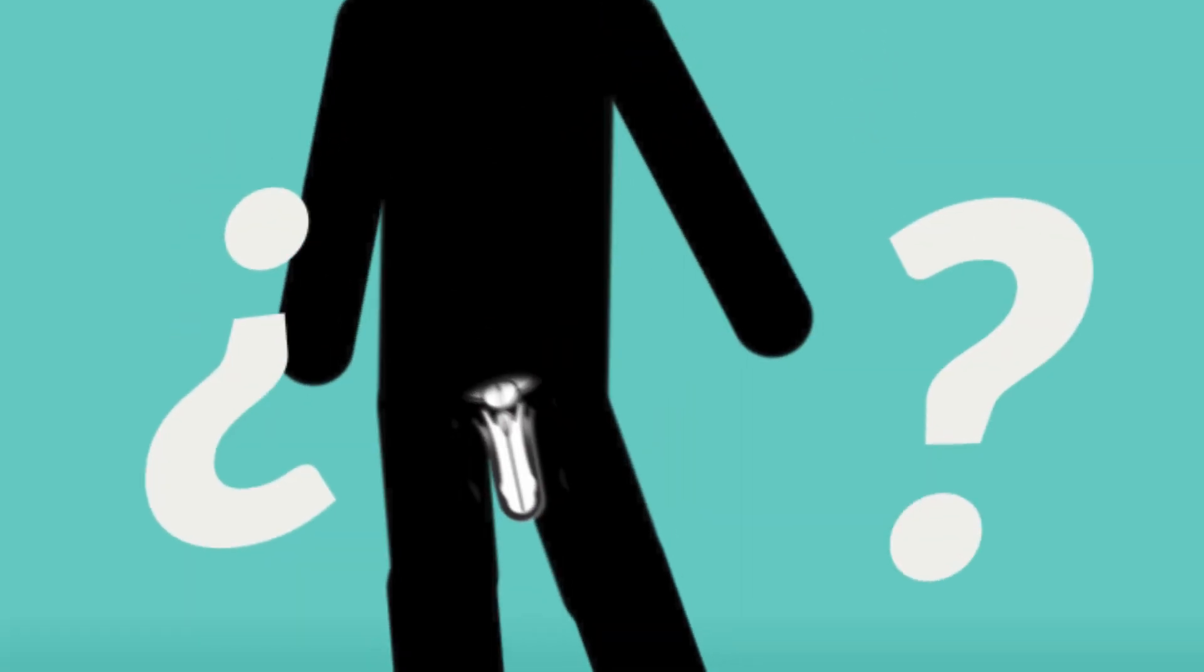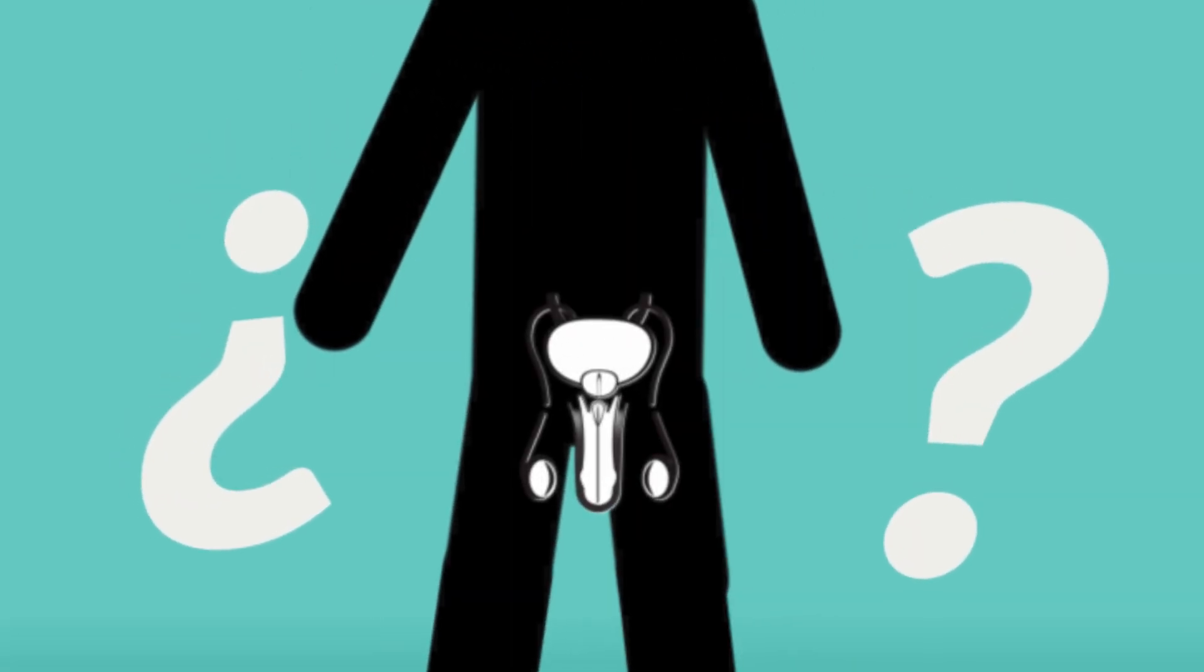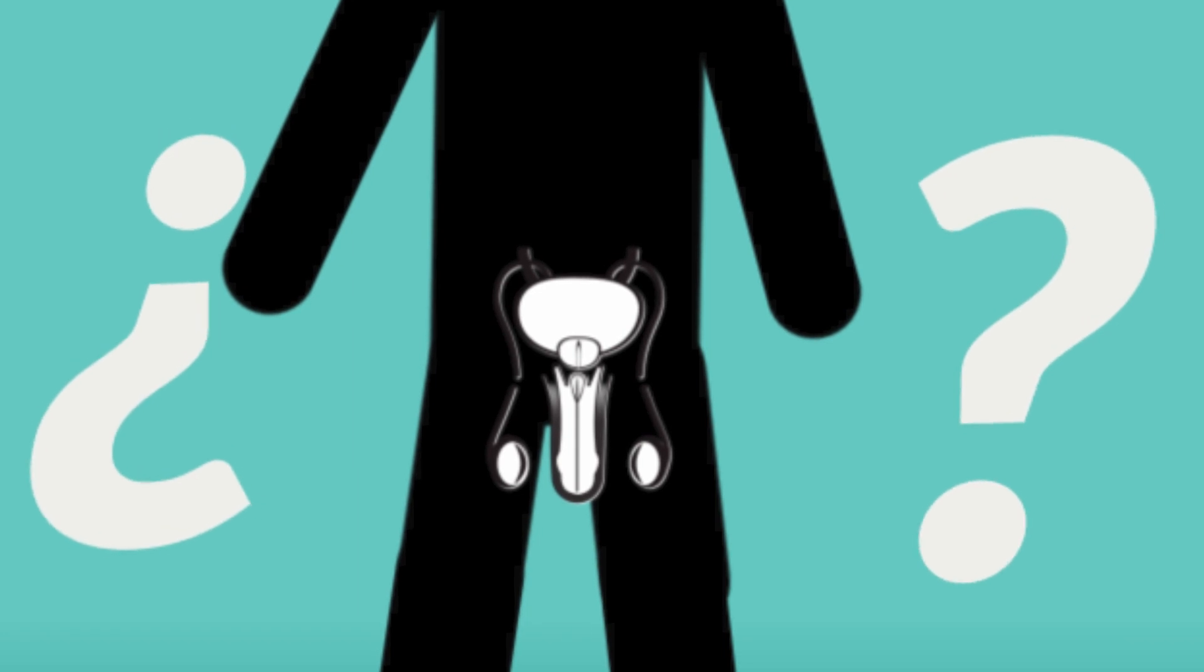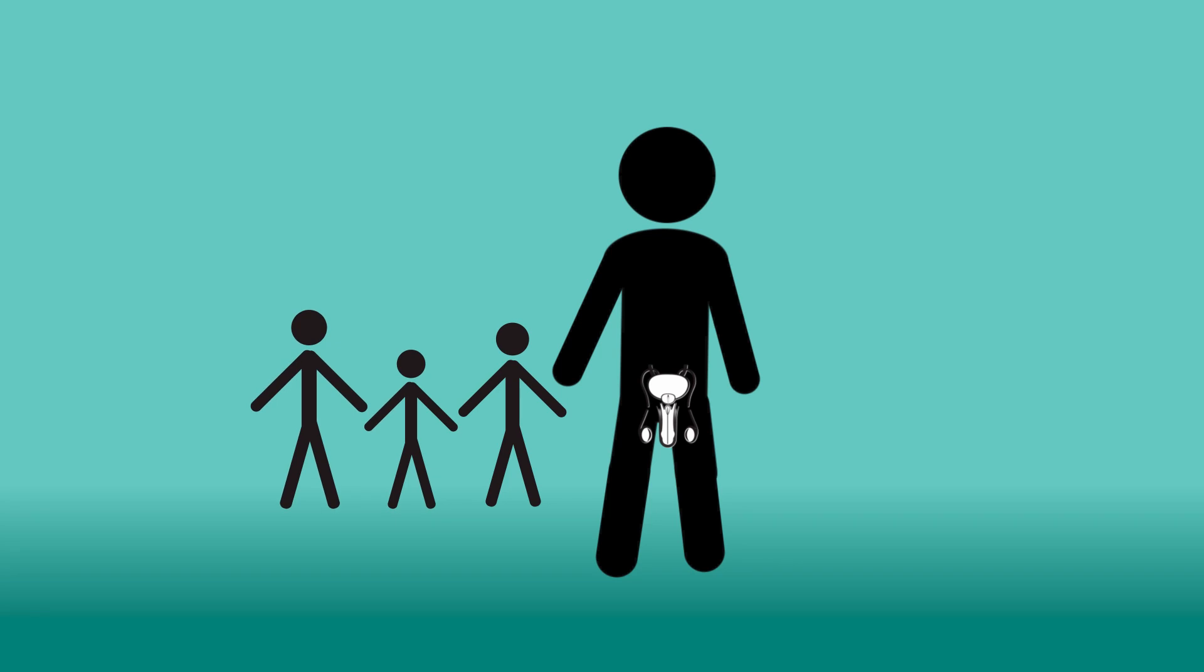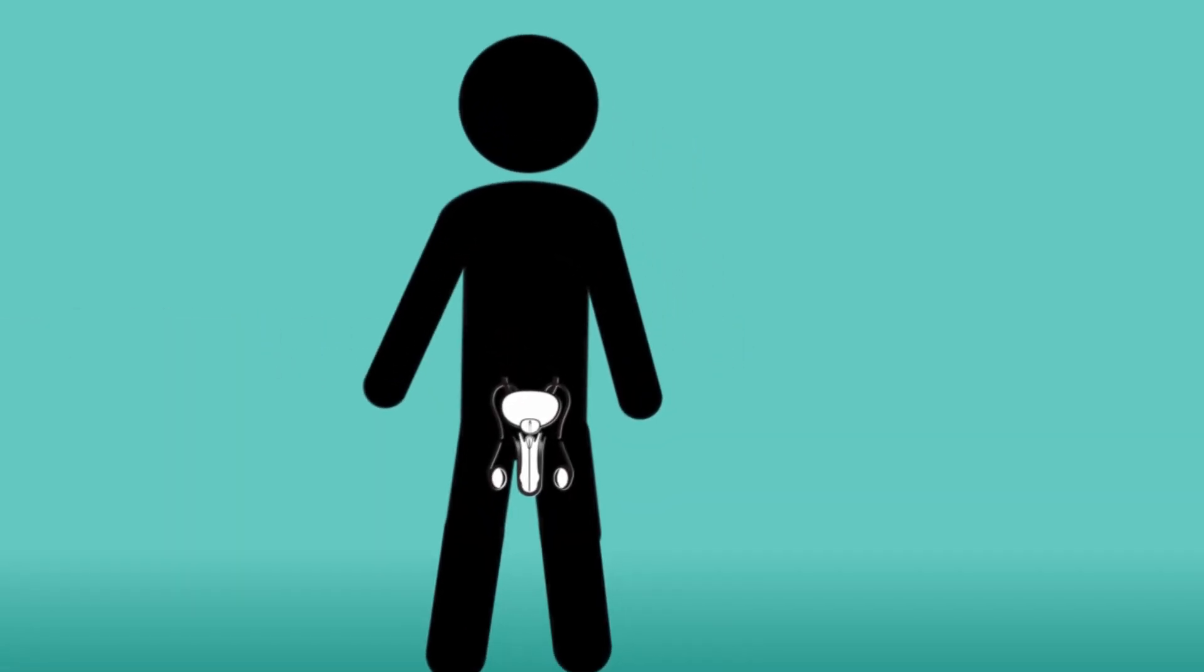But what is a vasectomy? In a nutshell, it is a permanent form of contraception only valid for men whose family is complete. For some, this means many children, but for others, that might mean having none.